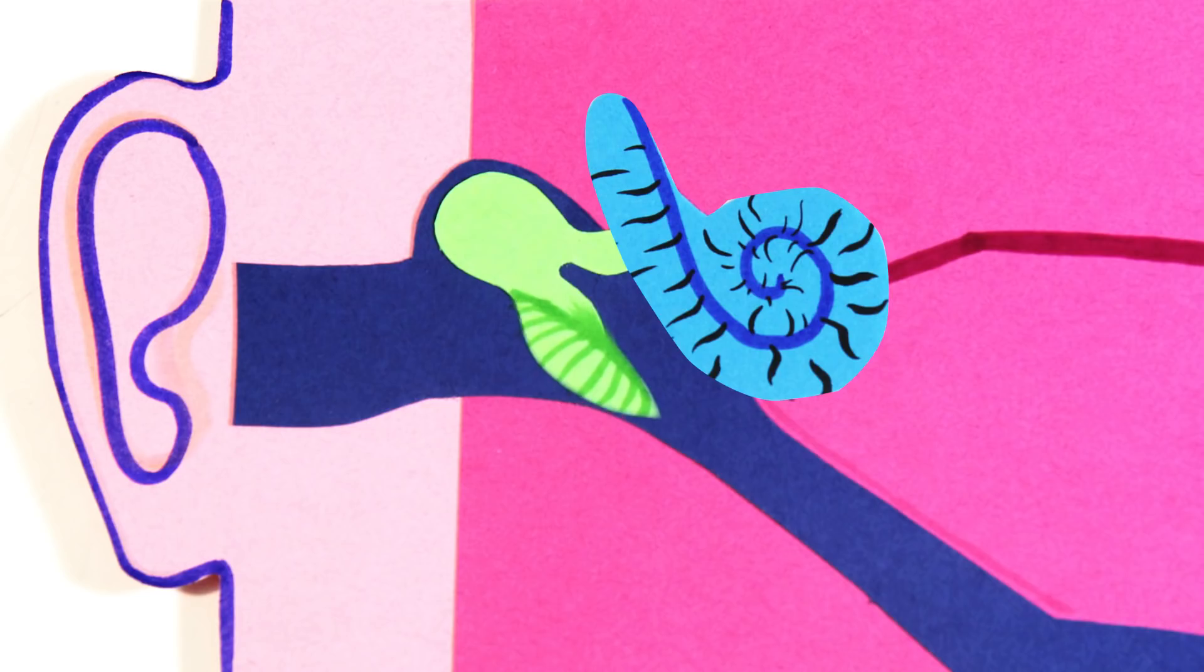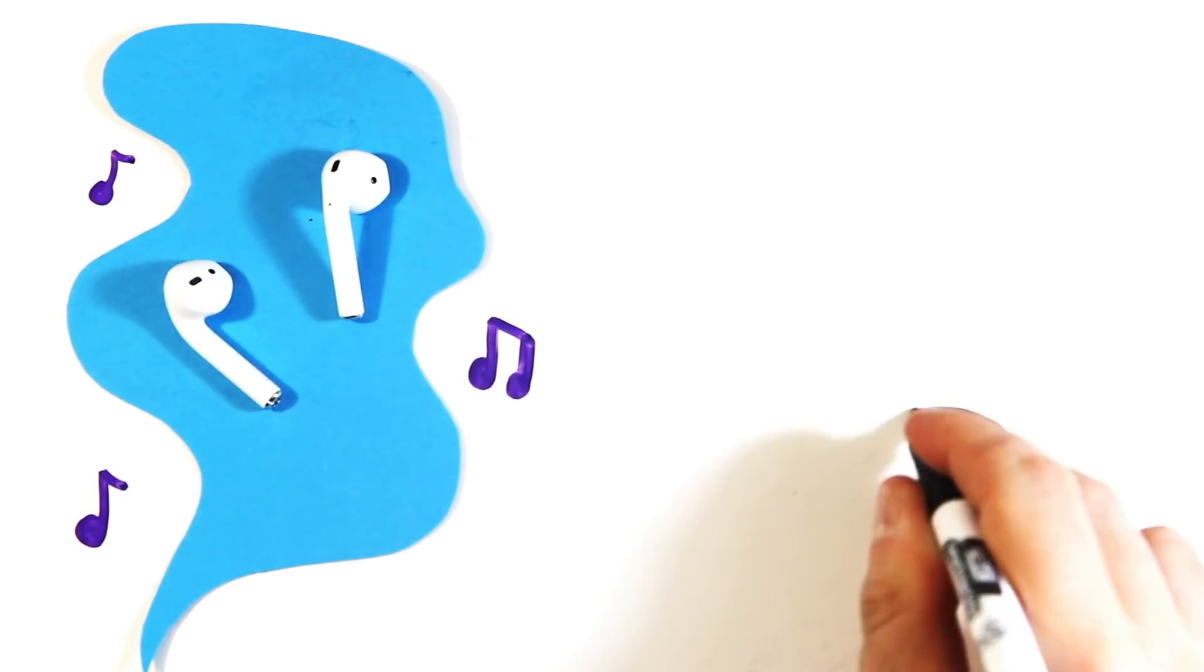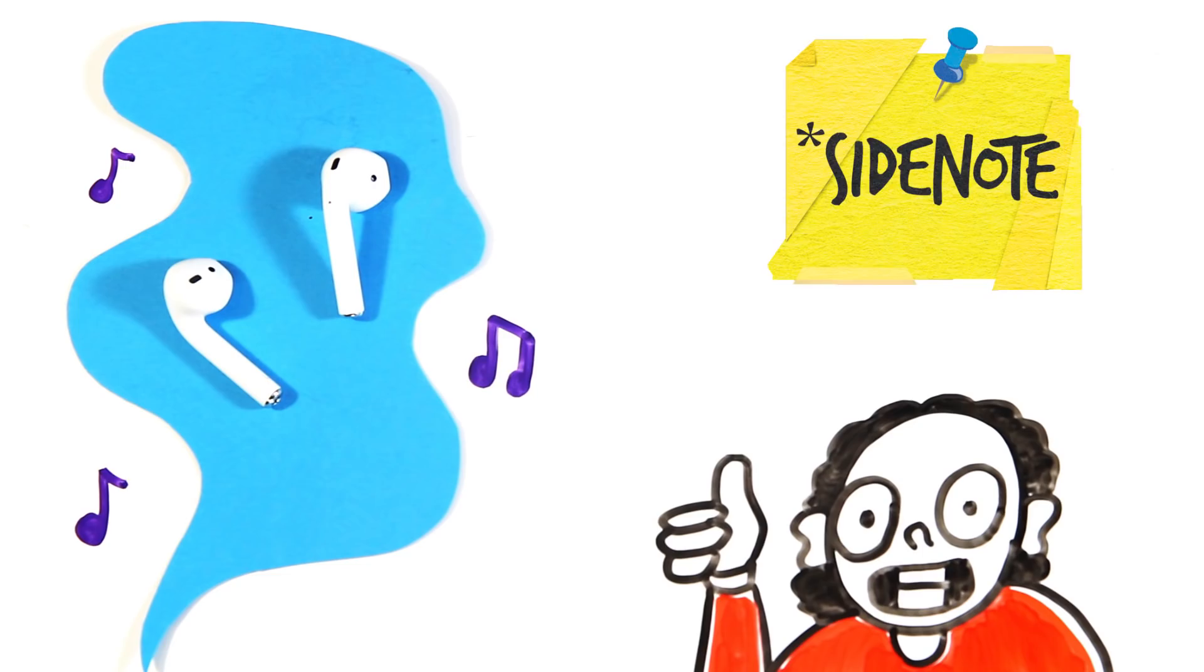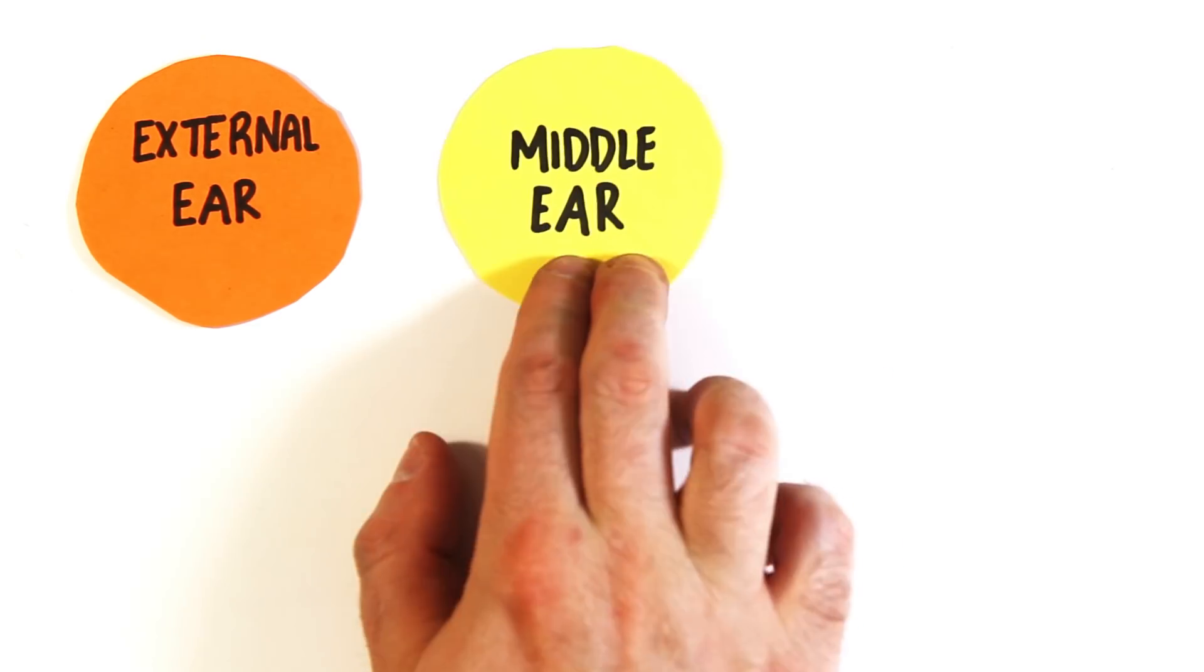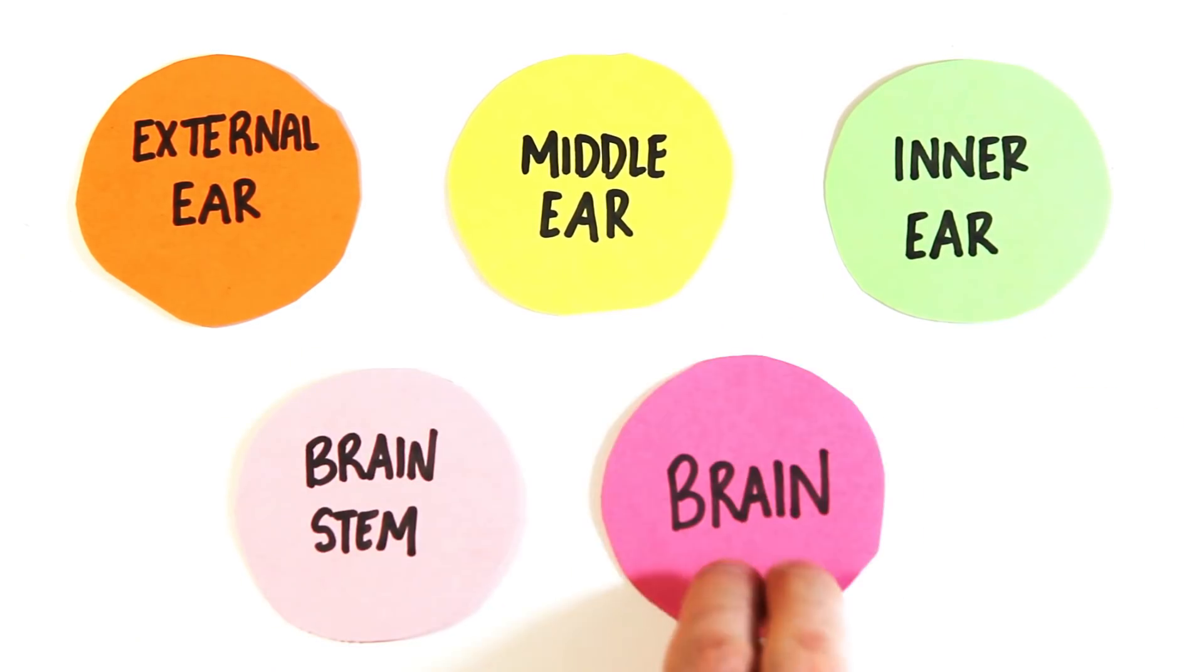This is how you hear anything, including whatever is coming out of your AirPods, such as music, or season one of our podcast, Side Note, streaming wherever you get your podcasts. In total, this process involves your external ear, middle ear, inner ear, brainstem, and brain.